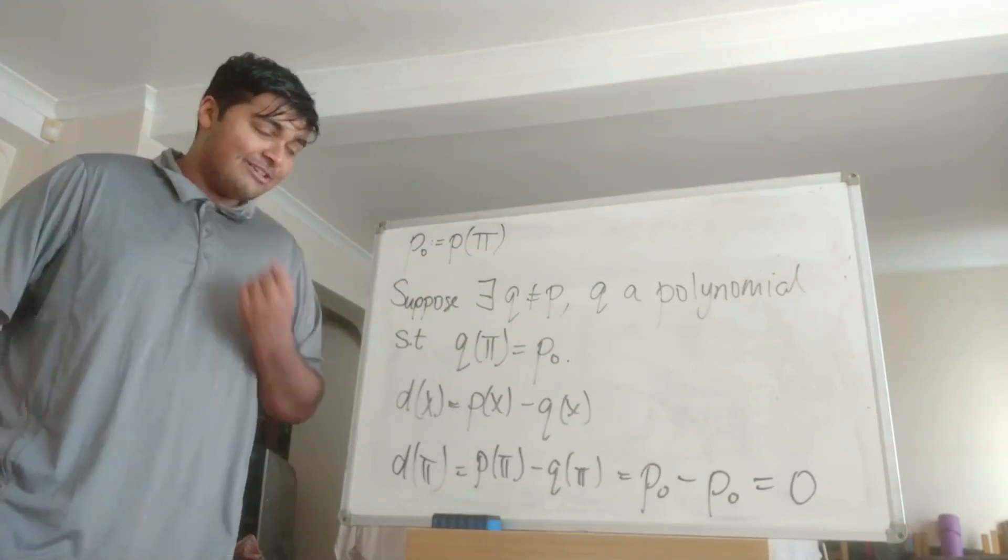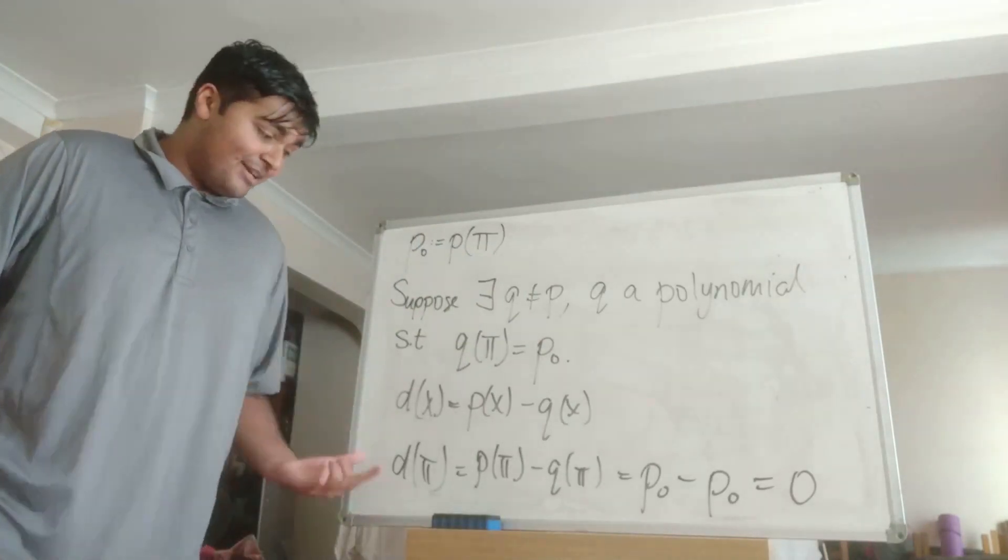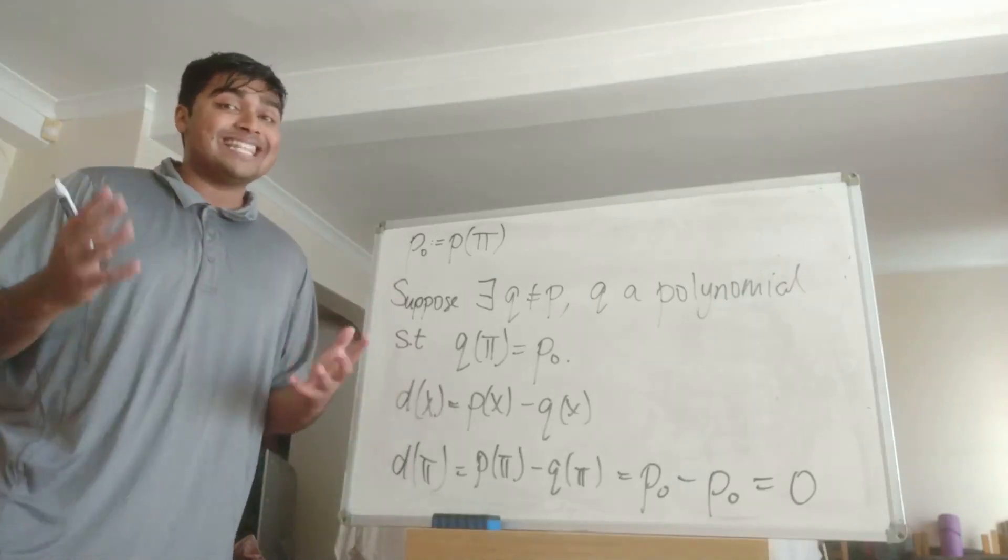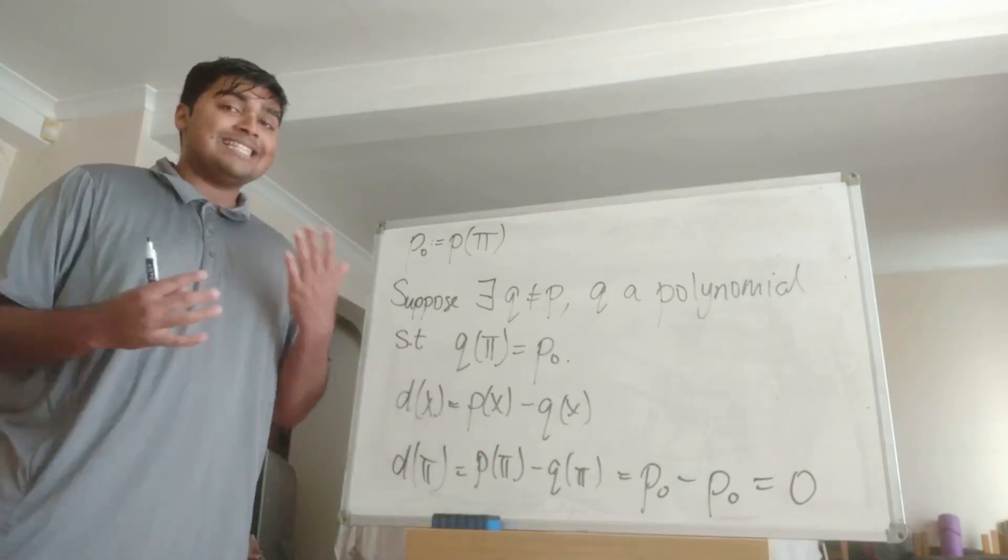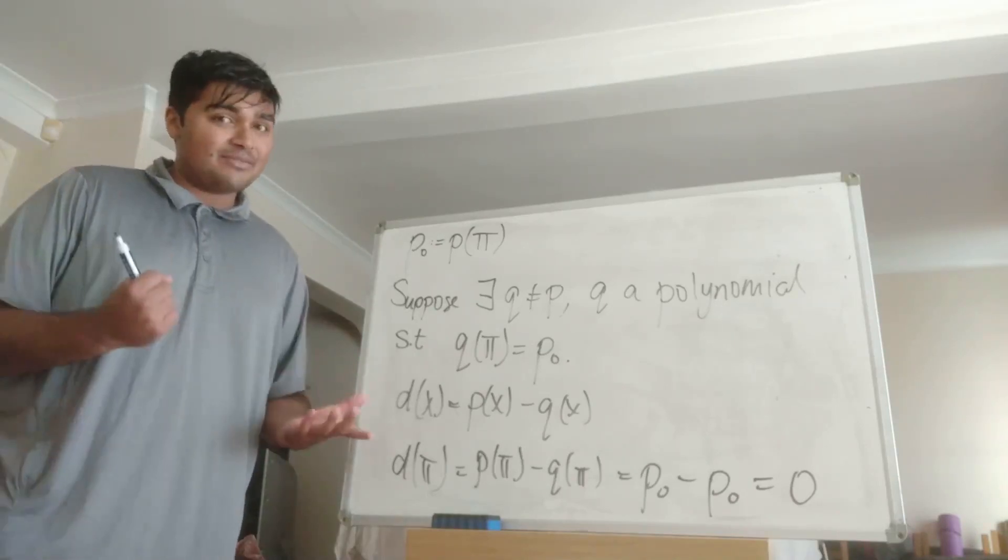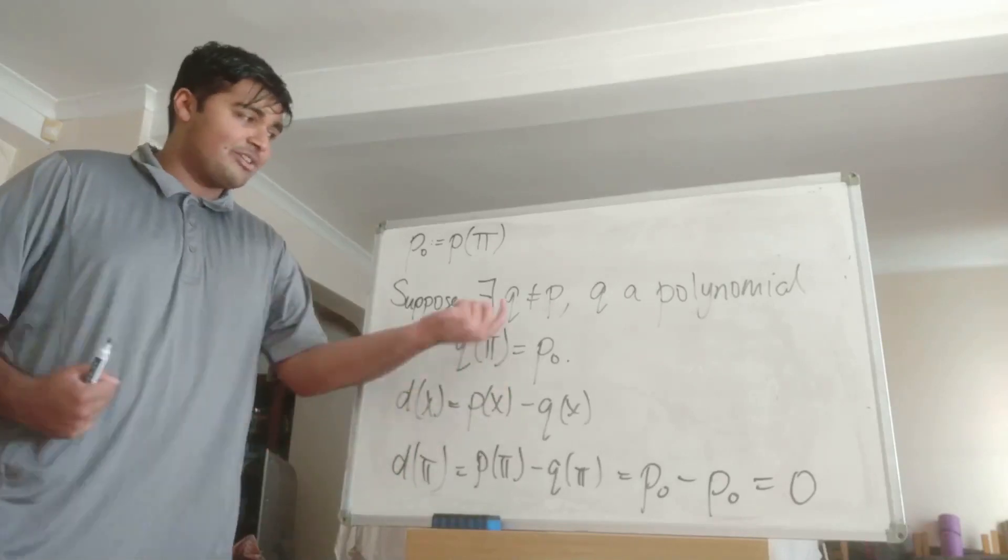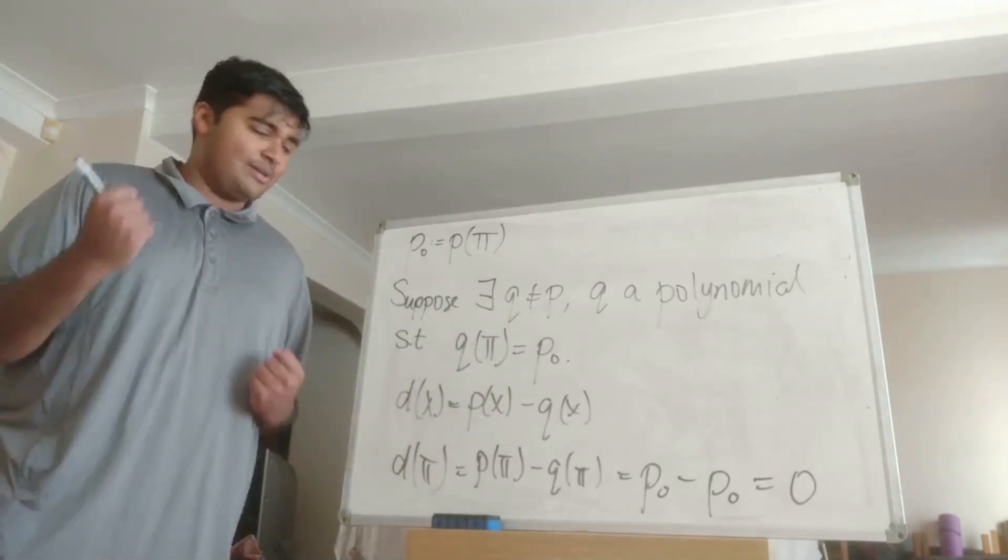So we have that D evaluated at pi is equal to zero but this is a massive concern. In fact this is our line of contradiction because D is a polynomial with rational coefficients, but because pi is what's known as a transcendental number, which means it's never the solution to any polynomial with rational coefficients, that means that D must be the zero function. So that means that P must equal Q and we get a contradiction because we're assuming that Q does not equal P.